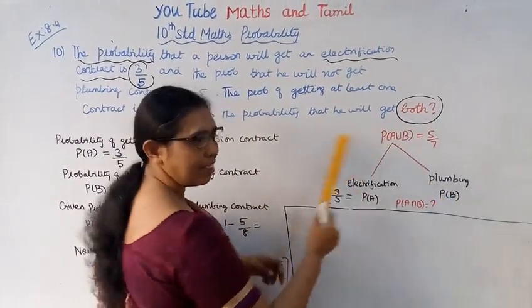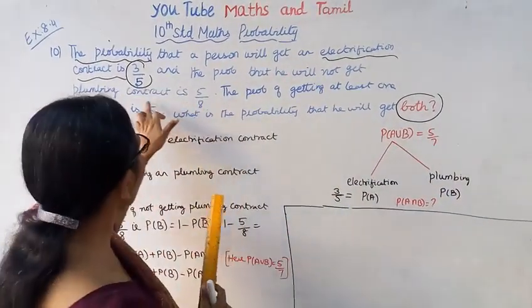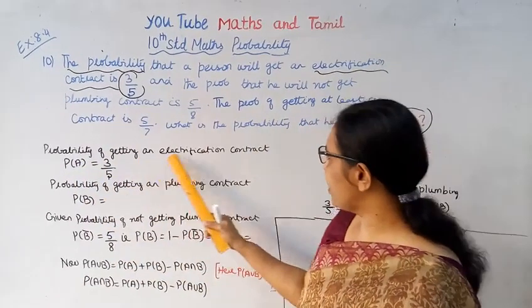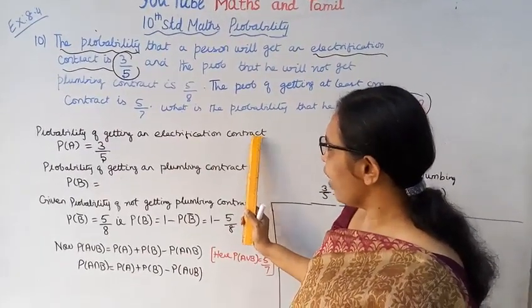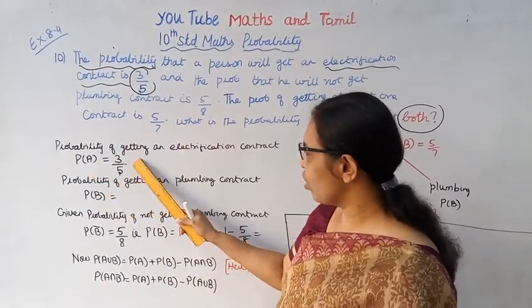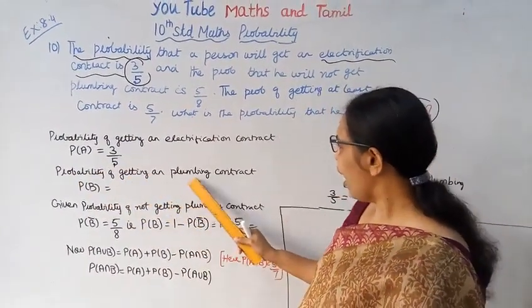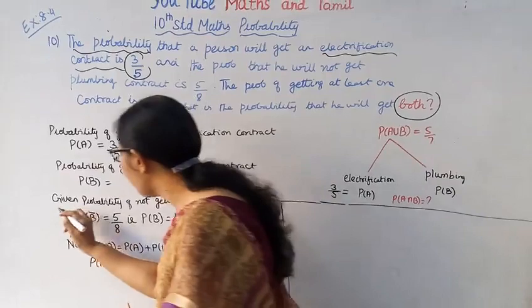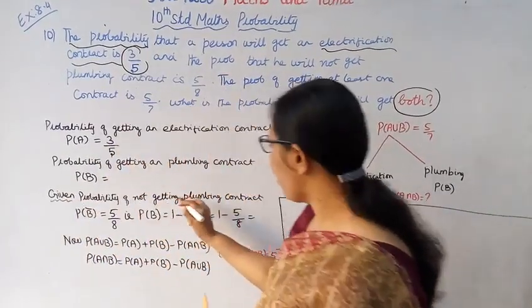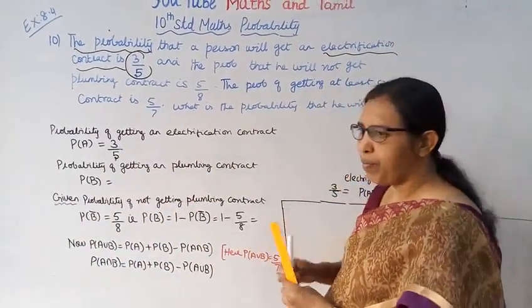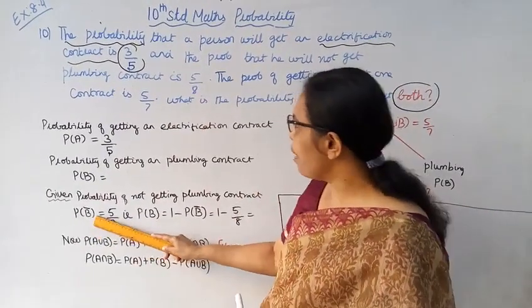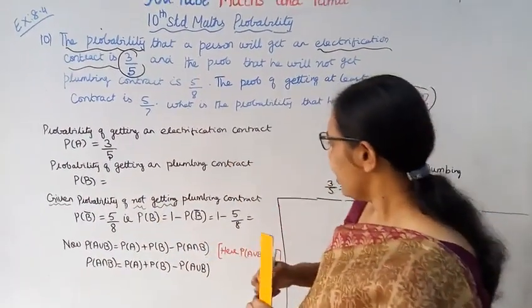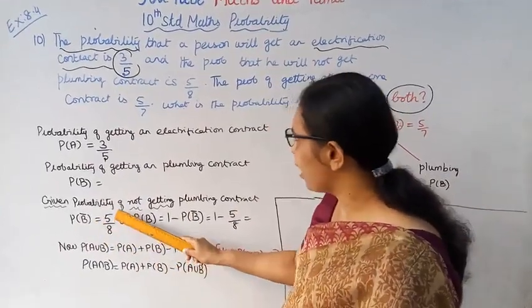Probability of getting an electrification contract, P(A), is given as 3/5. Now for plumbing contract, we're given the probability of NOT getting plumbing contract, P(B bar), which is 5/8.